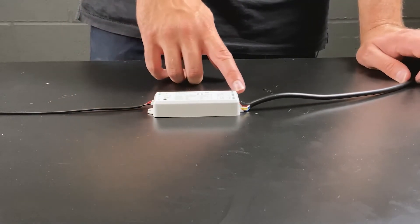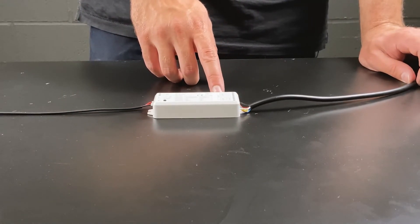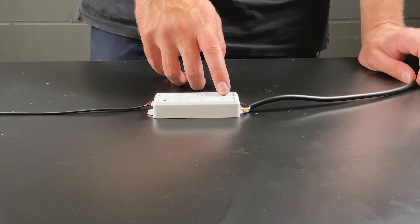For RGB CCT tape the black wire will go into the positive terminal, red, green and blue into R, G and B.